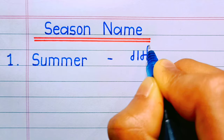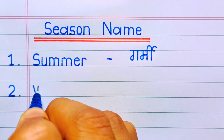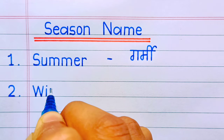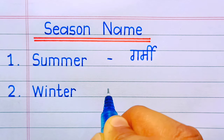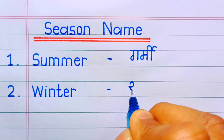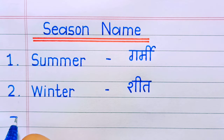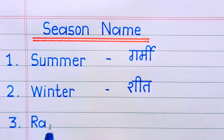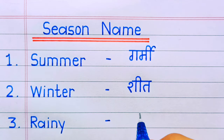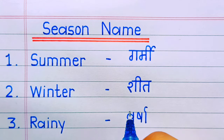Summer means garmi. Number two: winter — winter means seet. Number three: rainy — rainy means varsha.